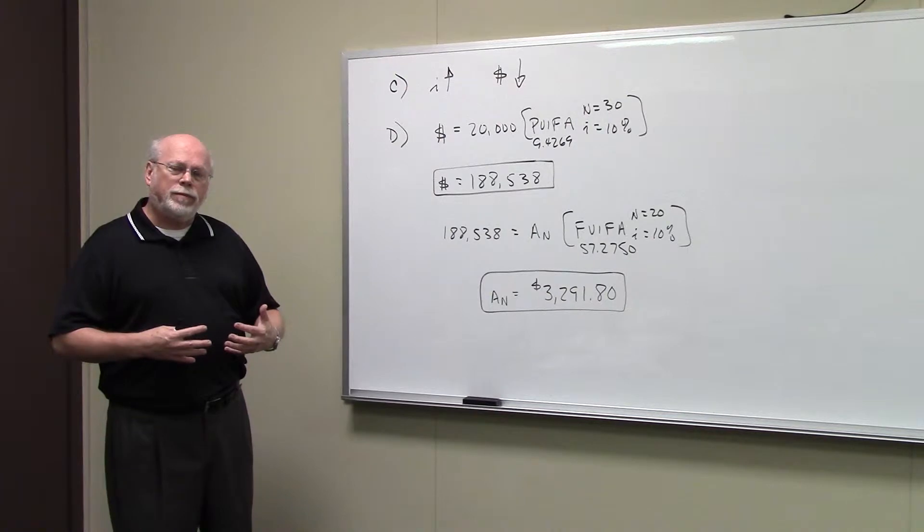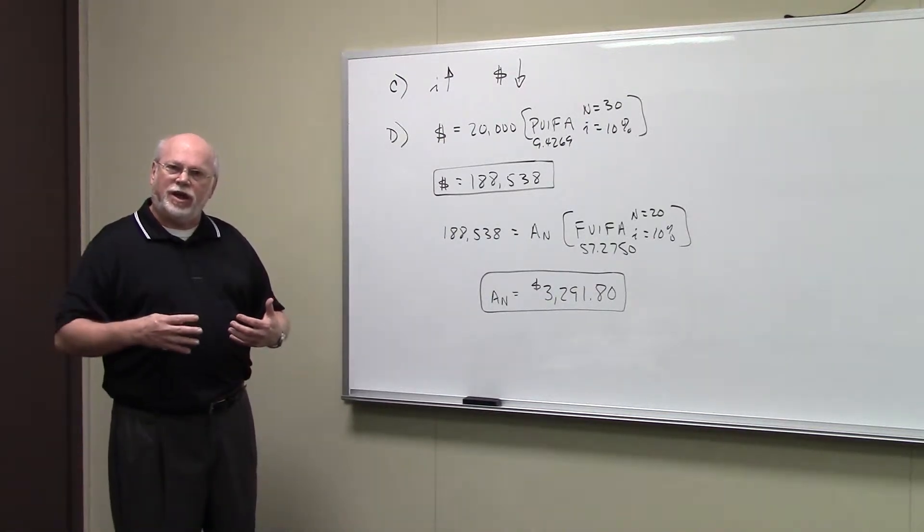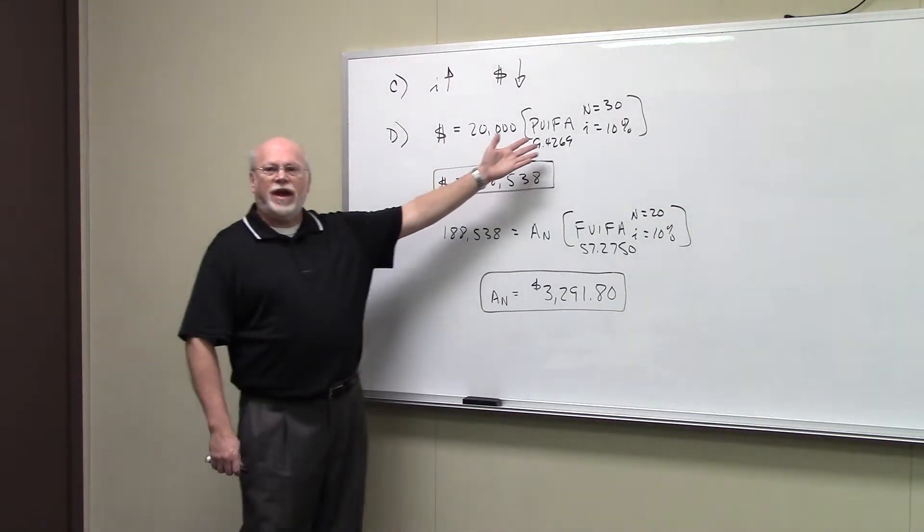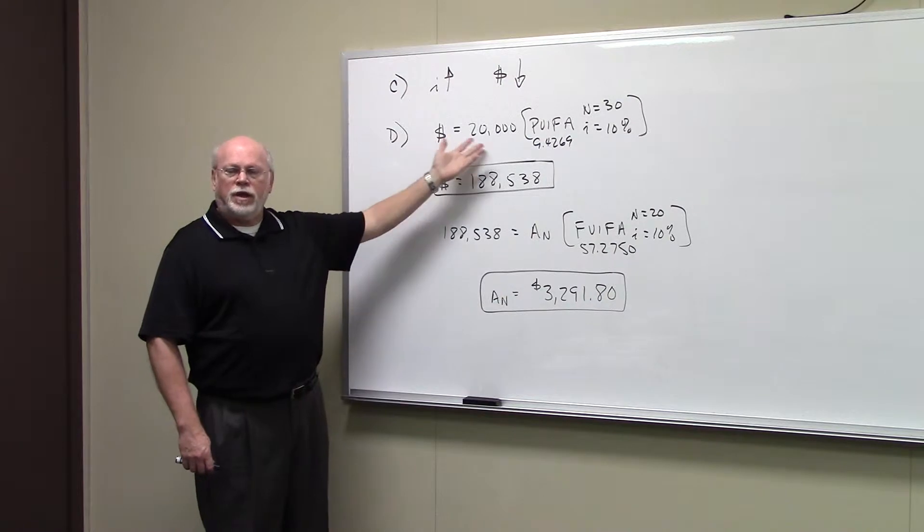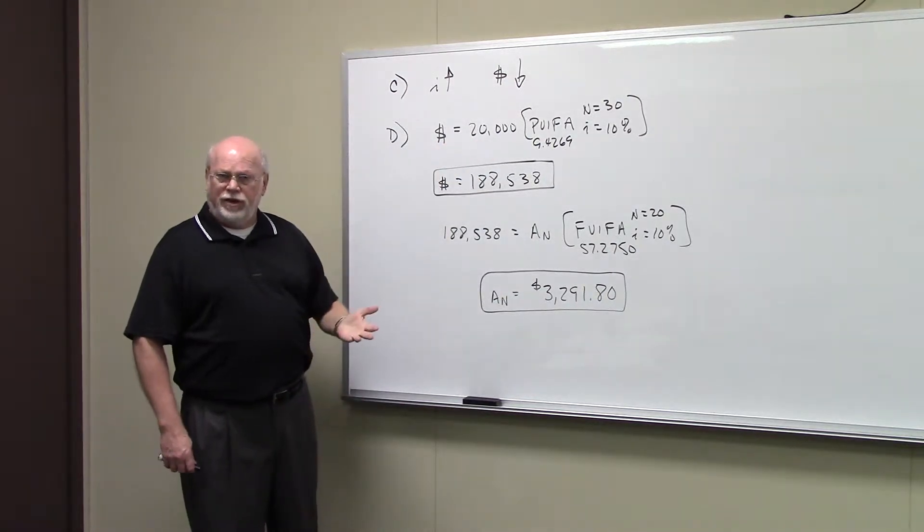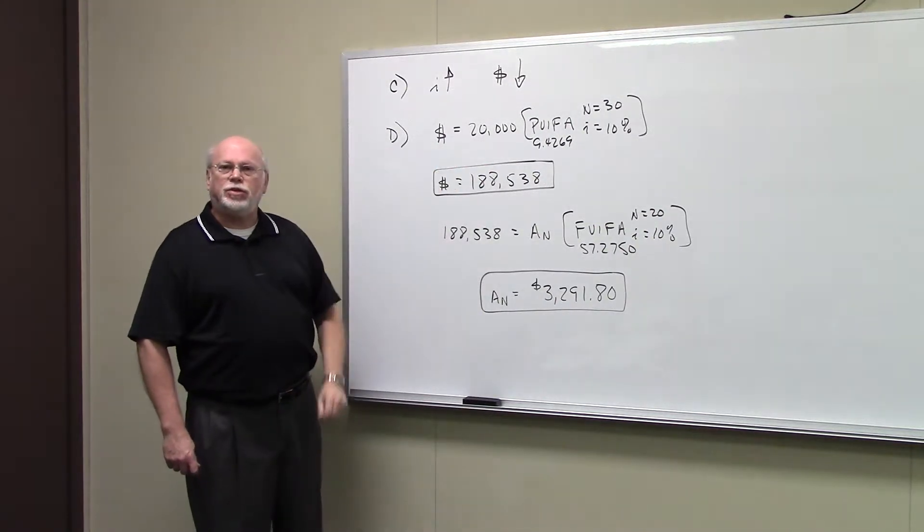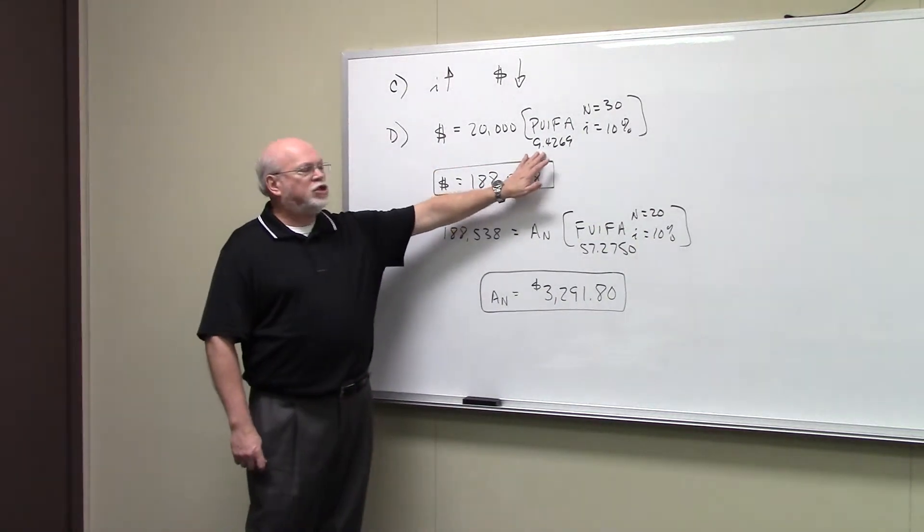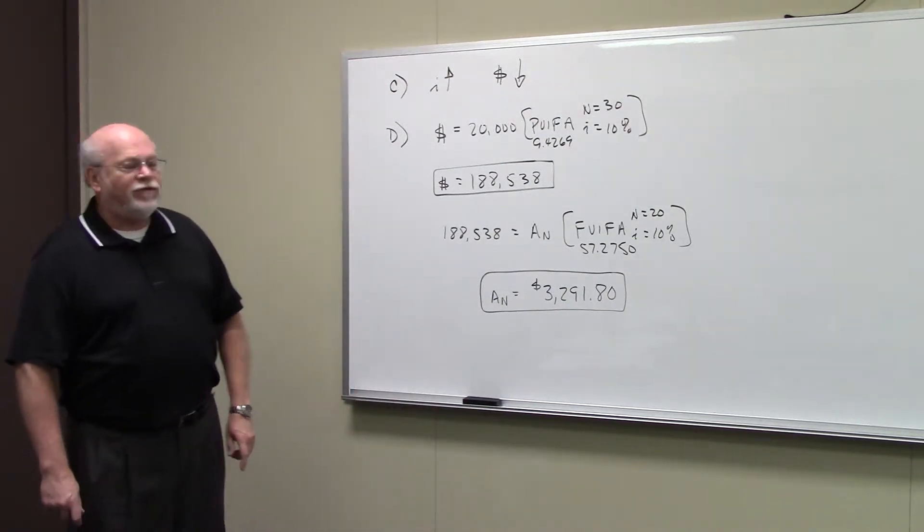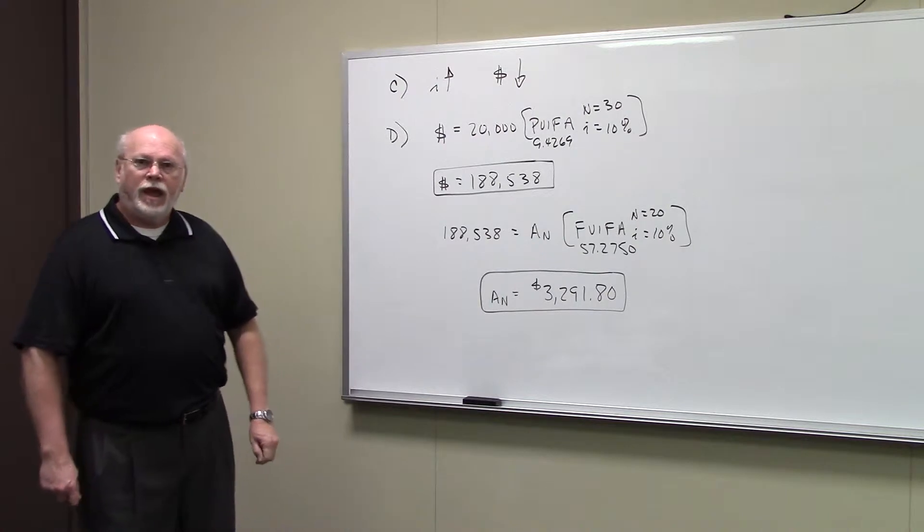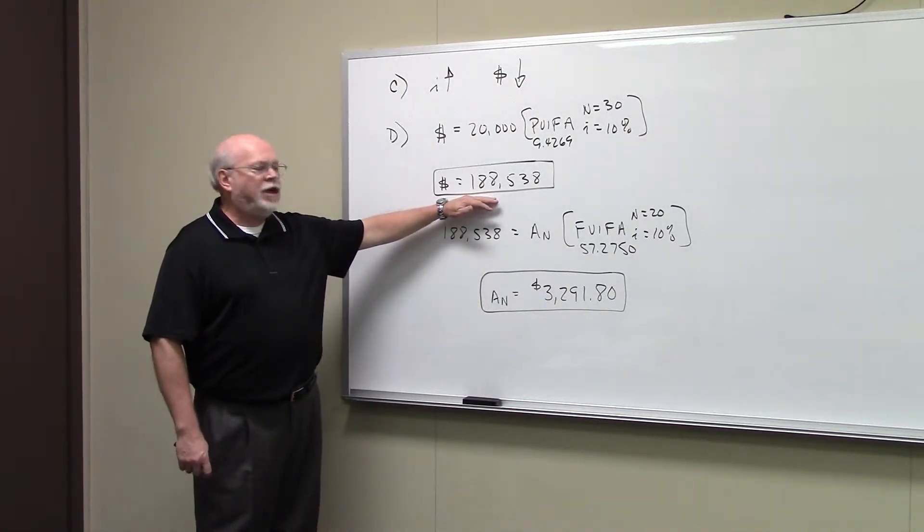Remember this is an annuity problem. The big dollar amount is at the beginning of this $20,000 annuity. So we would use our PVIFA. We're looking for the big dollar amount in this question. So $20,000 is the value of the annuity. You multiply that by your PVIFA at 30 and 10%. If you go to your interest factor tables, you'll find that that interest factor is 9.4269. Multiply that by 20,000, you get $188,538.